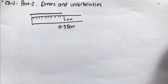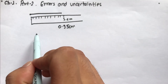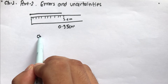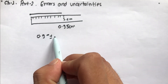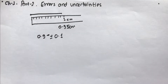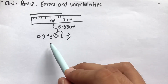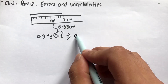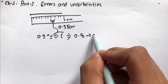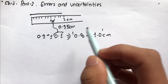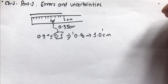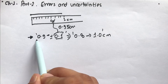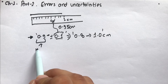So there are always uncertainties whenever you measure a certain physical quantity. For this value, what I can write is 0.9 plus or minus 0.1, which means the accurate value of this line could be between 0.8 and 1.0 cm. Uncertainty gives a range of values within which the accurate value of the physical quantity lies. The first part is the most likely value.